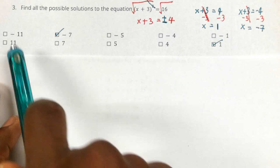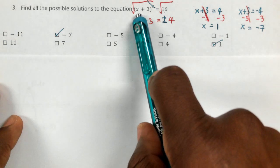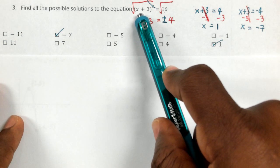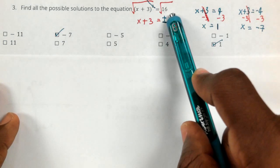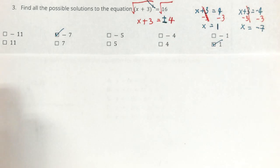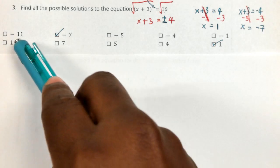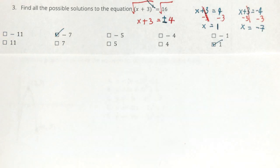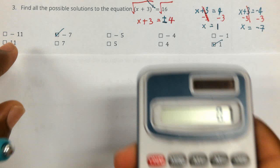You can also plug each of these numbers in for X and see which one of them will give you 16. That's another way that you can use. That's called process of elimination. However, that's going to take you a lot longer because you would have to plug it in for each of them to see which one of them will give you 16.